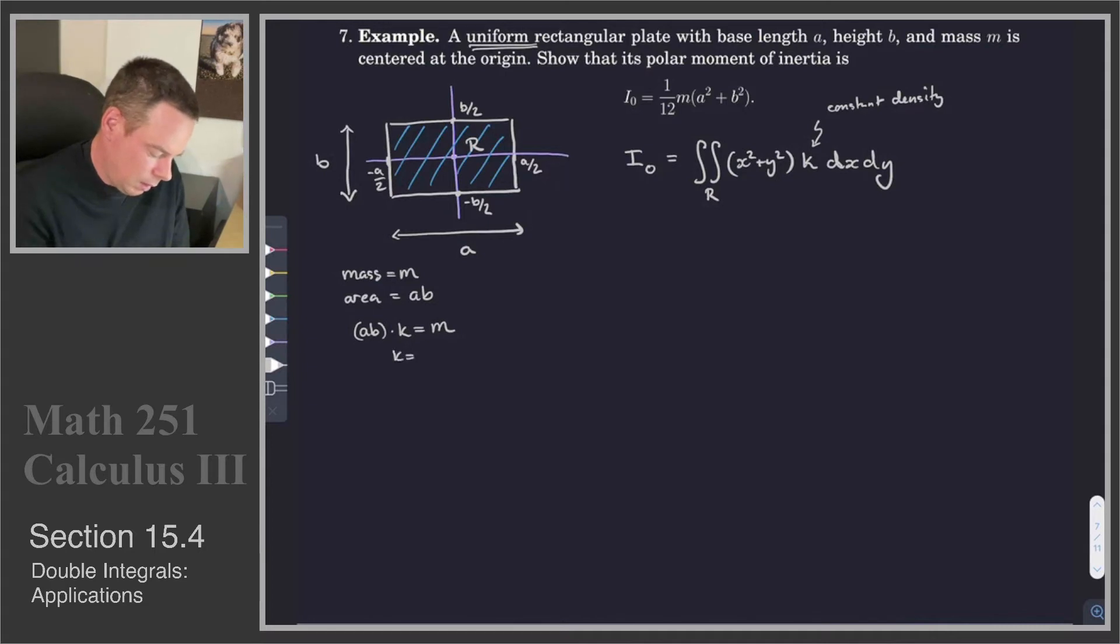Or in other words, K is equal to M/(AB). So that will be worth knowing eventually. But the idea is that this K, this constant density, we actually know what it is. It's M over the area.